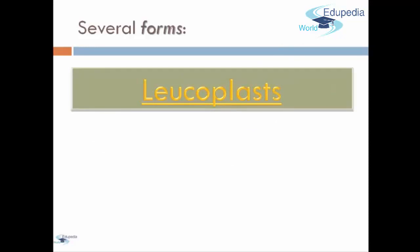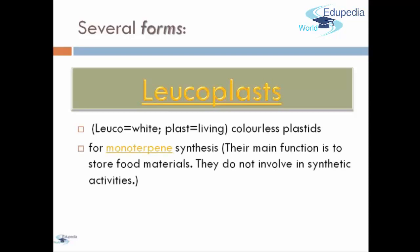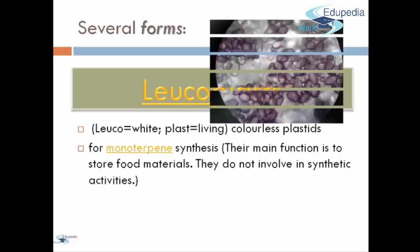The next form of Plastids is Leukoplasts. Leuko means white, Plast means living, and Leukoplasts is usually colorless. For monoterpene synthesis, their main function is to store food materials, and they do not involve in synthetic activities.